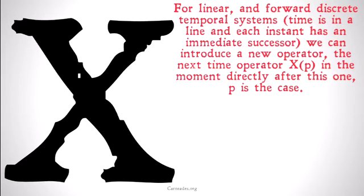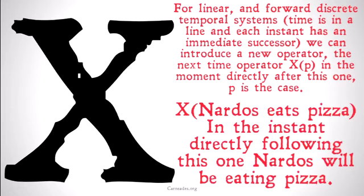For linear and forward discrete temporal systems — meaning time is in a line and each instant has an immediate successor — we can introduce a new operator known as the next time operator. We're going to denote this as XP, which means that in the moment directly after this one, P is the case.